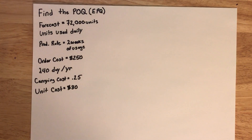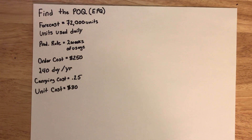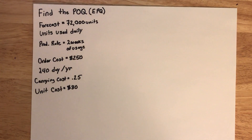Remember that the POQ is different than our economic order quantity, or the EOQ, because it assumes that we are producing the inventory at the factory, and therefore we will have to account for the inventory holding cost as we produce.